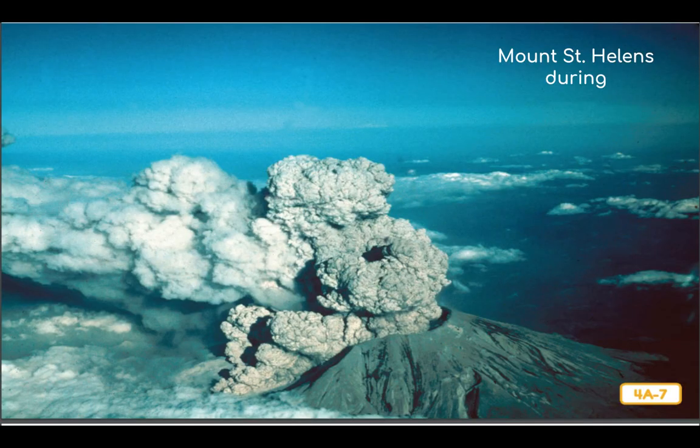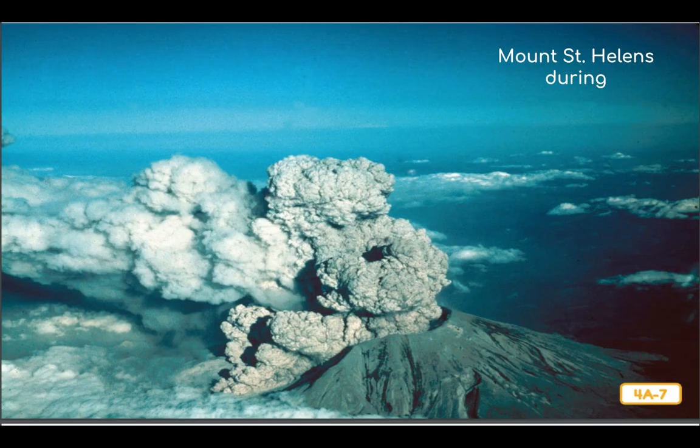Eventually the pressure becomes so intense that — boom — pressure caused the volcano to erupt. The eruption of Mount St. Helens was the most destructive volcanic eruption in U.S. history. Hundreds of homes were destroyed and thousands of acres of forest were leveled when this mighty volcano erupted. In an instant, the top of one side of the mountain was literally blown away.